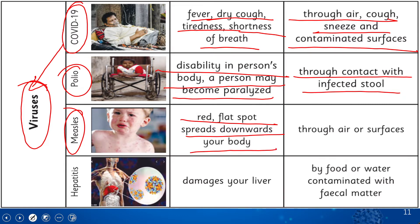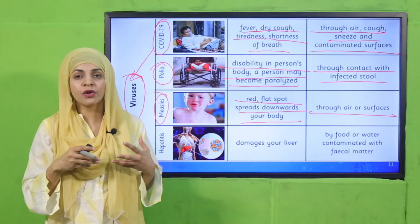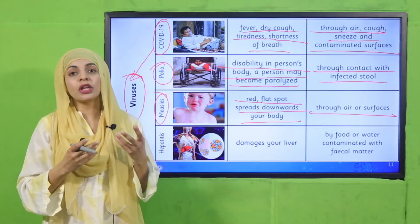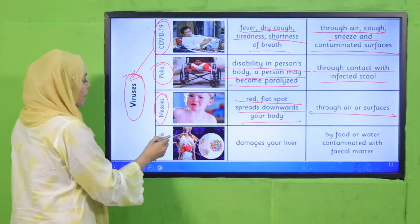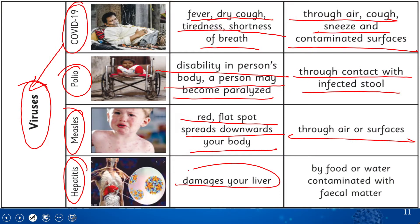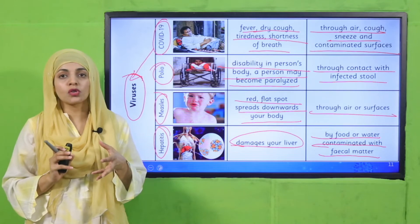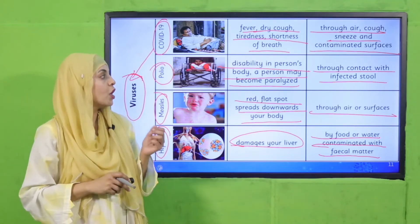Next is measles, which also spreads through air or contaminated surfaces. After that is hepatitis, a virus that damages your liver and can also cause death. It is transmitted through food or water contaminated with waste matter — if there is contamination in the water supply, it can cause hepatitis, which enters our body and damages our liver.